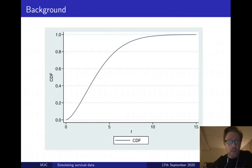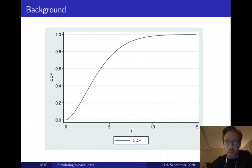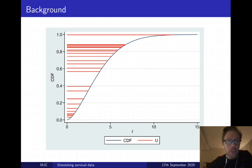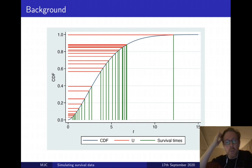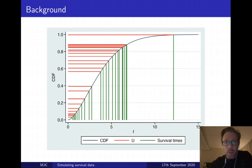To make that a bit clearer: this is the CDF of a defined Weibull distribution. On the x-axis is t, and on the y-axis is the cumulative distribution function, which goes from 0 up to 1. To simulate observations, I simulate draws from a uniform 0,1 distribution representing centiles, draw across from the y-axis until I meet my distribution function, and go down to find the associated survival times. So it's simply showing how we invert the CDF to get simulated survivor times — really simple.